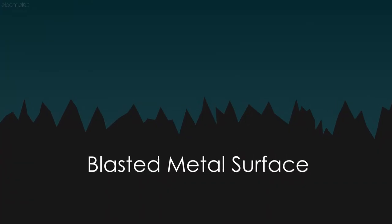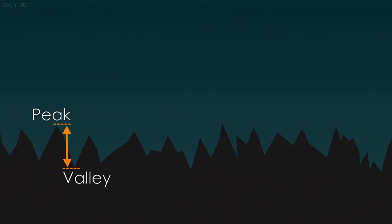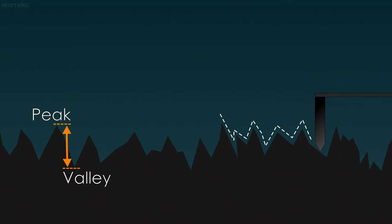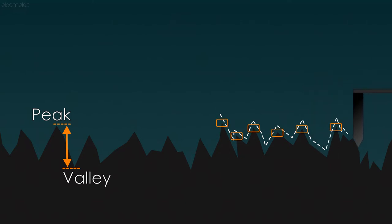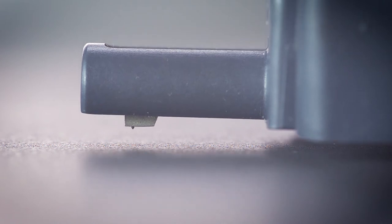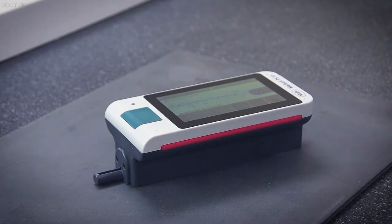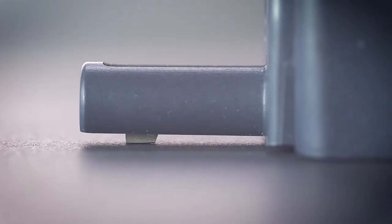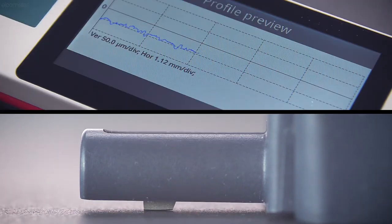Surface profile should not be confused with roughness. Surface profile is a measurement of the peak to valley height. Surface roughness, on the other hand, is the combined measurements of the surface profile and the frequency of the peaks across a linear length, also known as the peak count. Surface roughness is measured using a stylus instrument, which follows a similar linear path as our A to B example, only over a shorter distance.